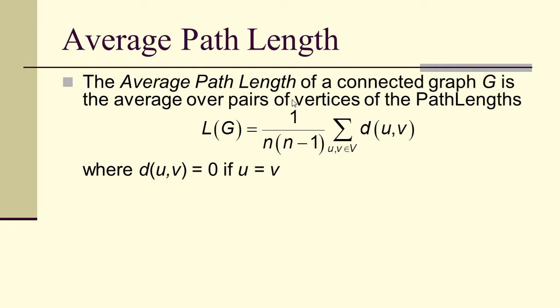The average path length of a connected graph G is the average over pairs of vertices of the path lengths. We would say that d(u,v) is 0 if u equals v. That's really for convenience and allows us to write down this formula very simply. So if I have the path 0 to 1 to 2, then the distance from 0 to 1 and from 1 to 2 is 1, but the distance from 0 to 2 is 2. So the path length is the average 1 plus 1 plus 2 over 3, which is 4 thirds. That's the average path length.